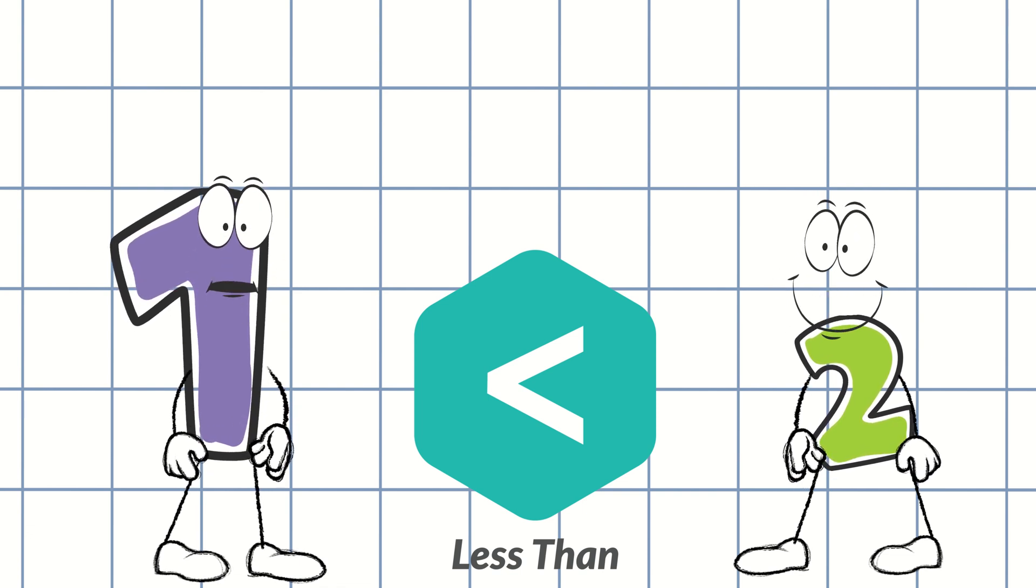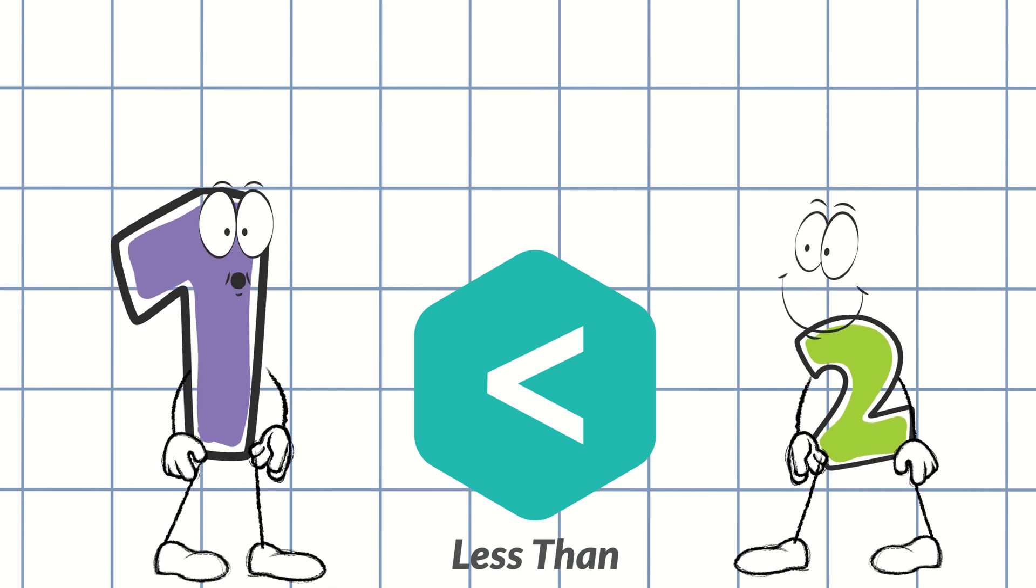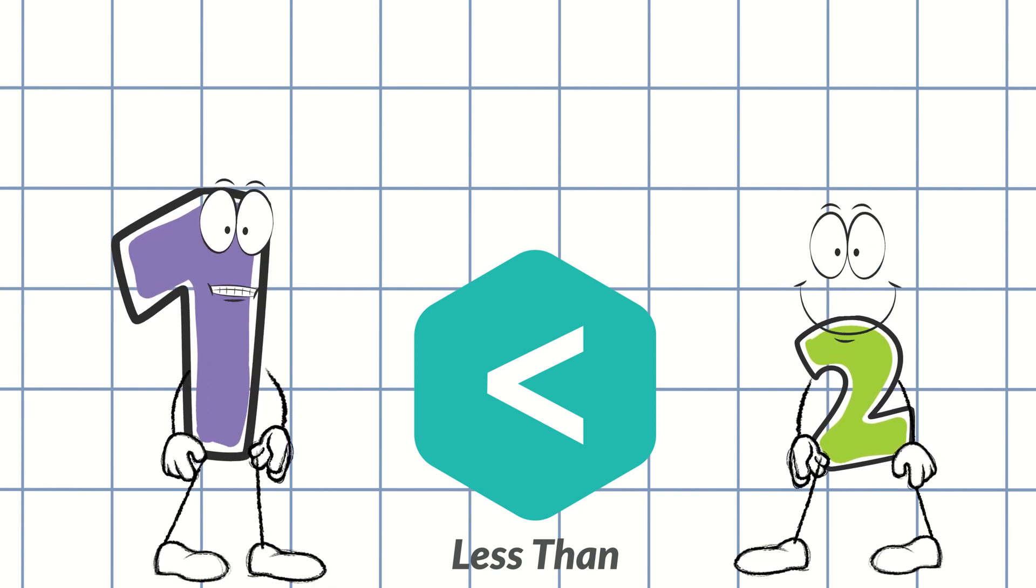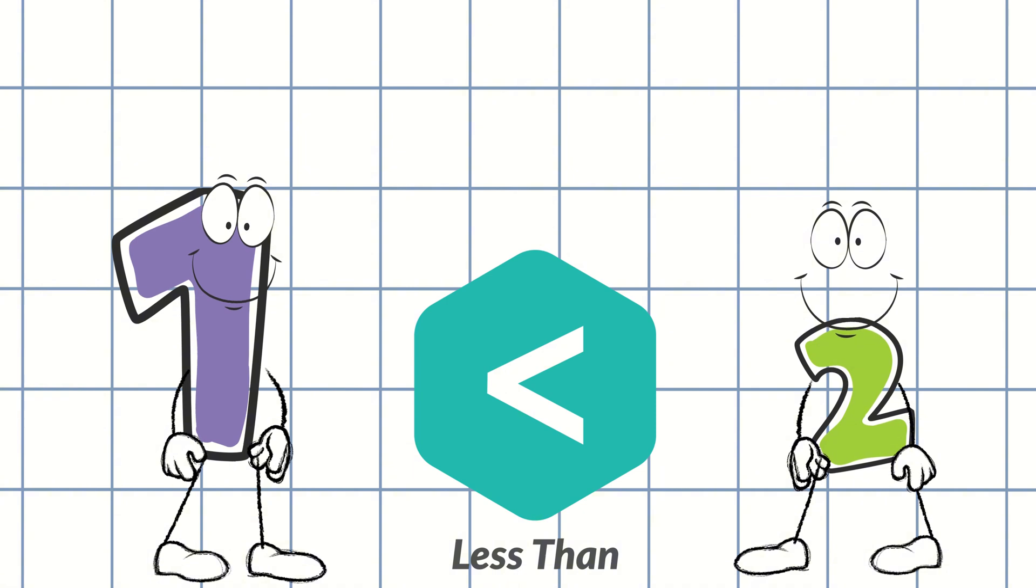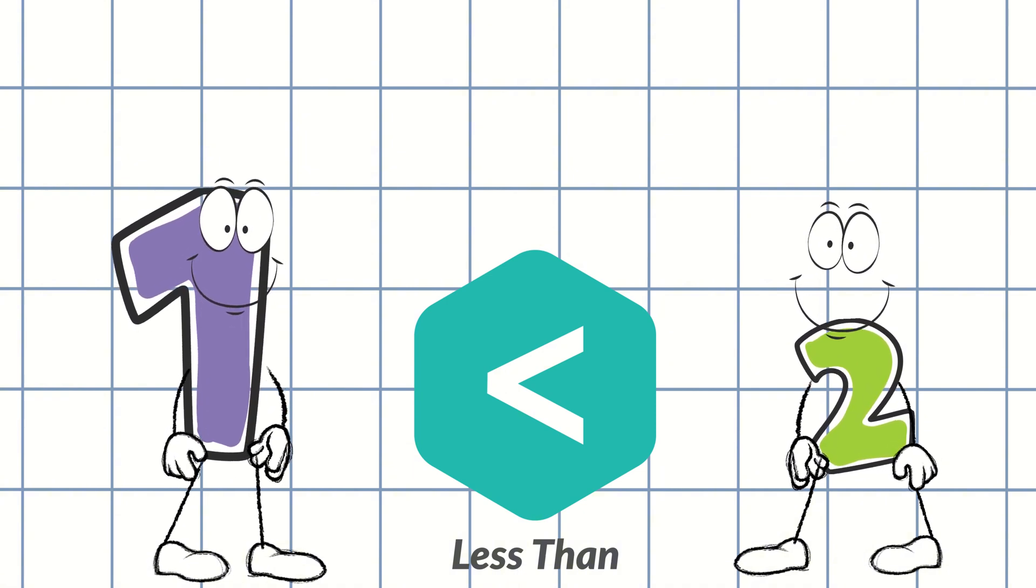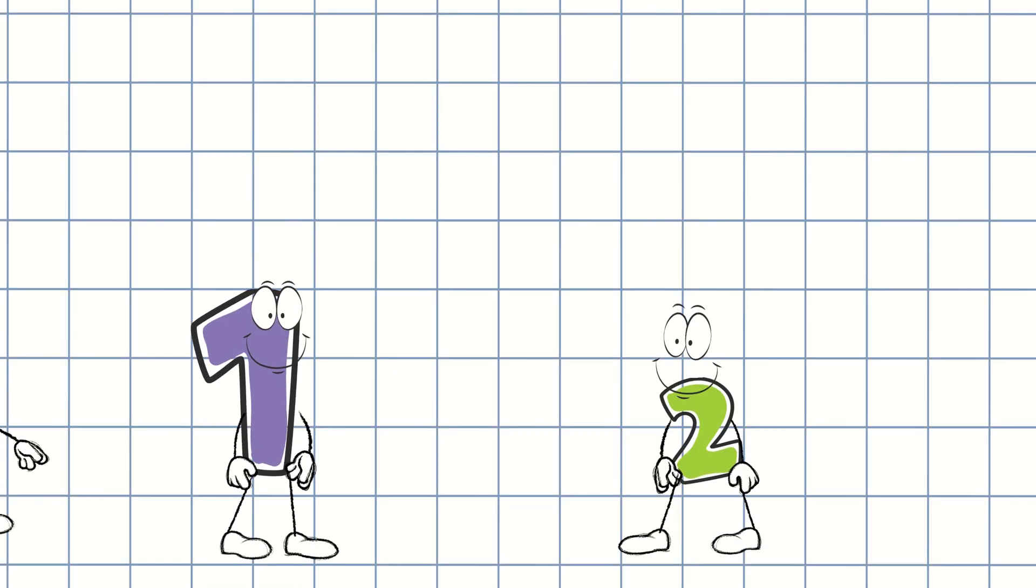Okay, but what if another number two comes? Who will be greater between the two of you? Good question, number one. Let's see what happens when two numbers are exactly the same. Let's call in another number two.